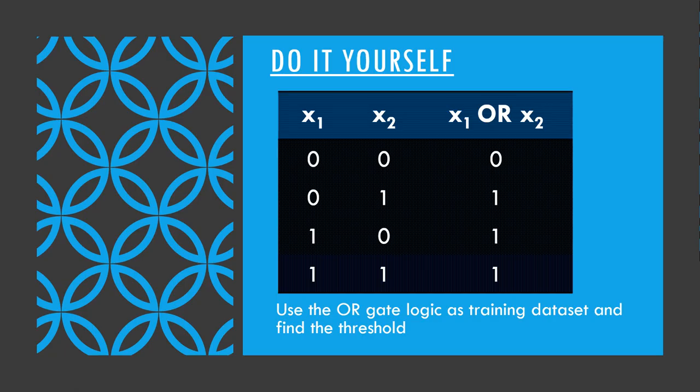Question time. Now what changes do you need to make to classify a dataset that resembles the working of the OR gate?